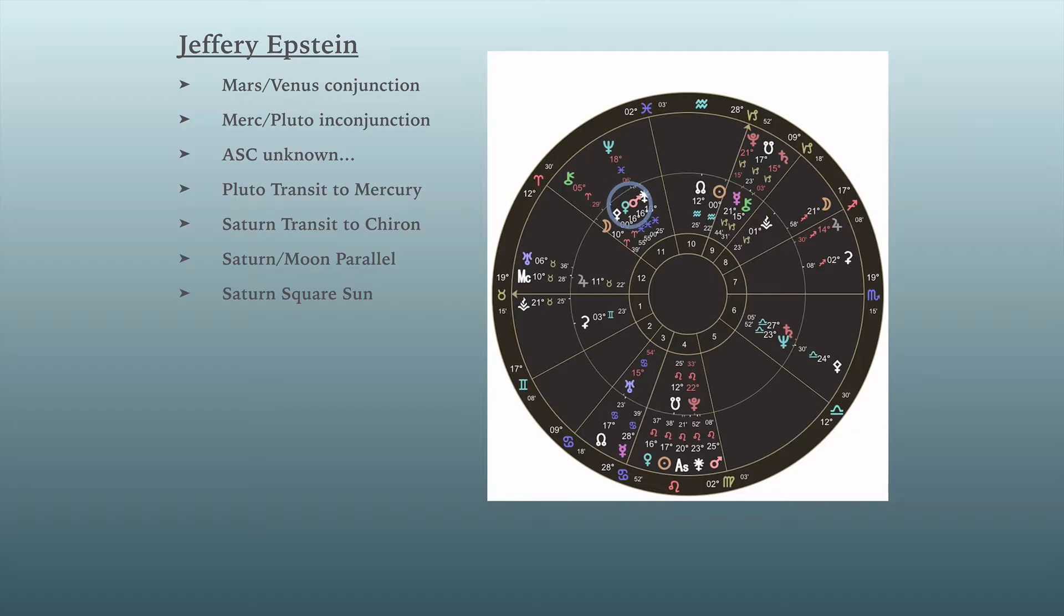I don't have his ascendant. So the ascendant is probably inaccurate. So the chart was set up for around noon. He was an Aquarian. Let's see, where was his moon? Moon in Aries. He had Venus conjunct Mars. Okay.